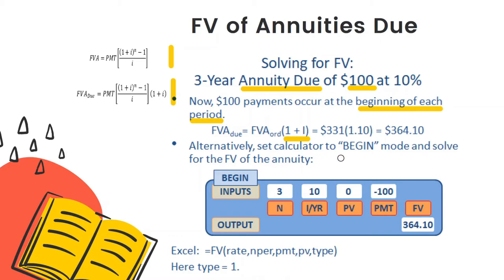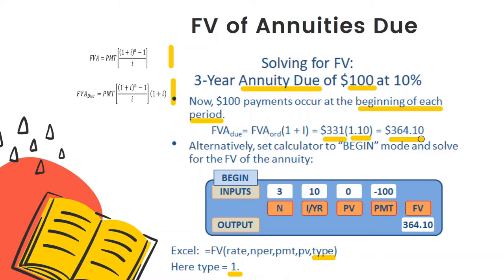Using a financial calculator for annuity due, you must set the calculator into beginning mode and apply the same inputs. In Excel, the last input must equal one. The interpretation: if you deposit 100 dollars a year starting one year from now, at the end of year three you will have 331 dollars. But if your first deposit occurs today, you earn interest one more period, so at the end of year three your deposits grow to 364 dollars.